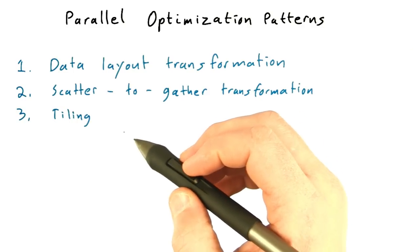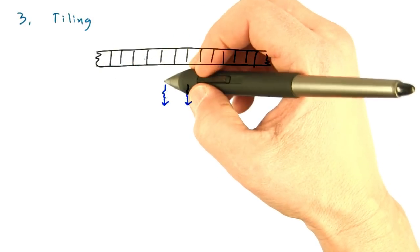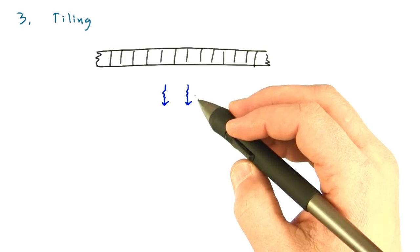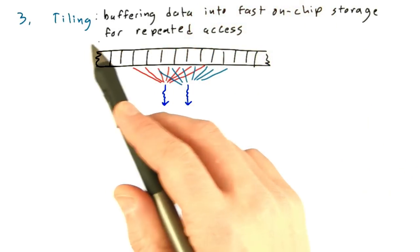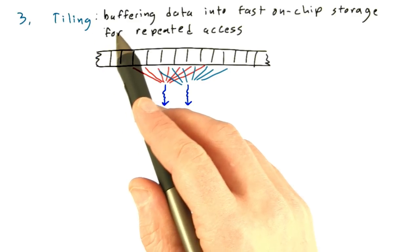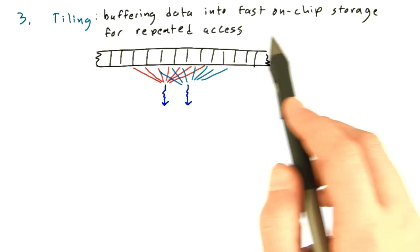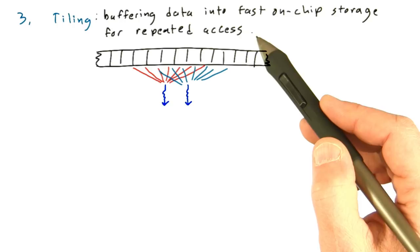Stratton calls the third technique tiling. Often multiple threads, or more generally multiple computational tasks, need to access overlapping parts of a data structure. Stratton uses the term tiling to refer to buffering data onto fast on-chip storage where it will be repeatedly accessed.